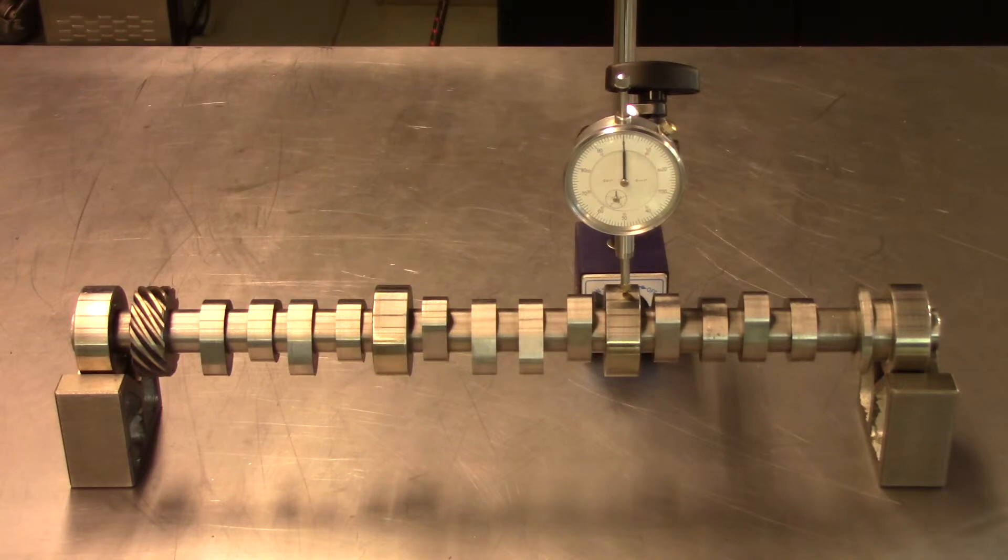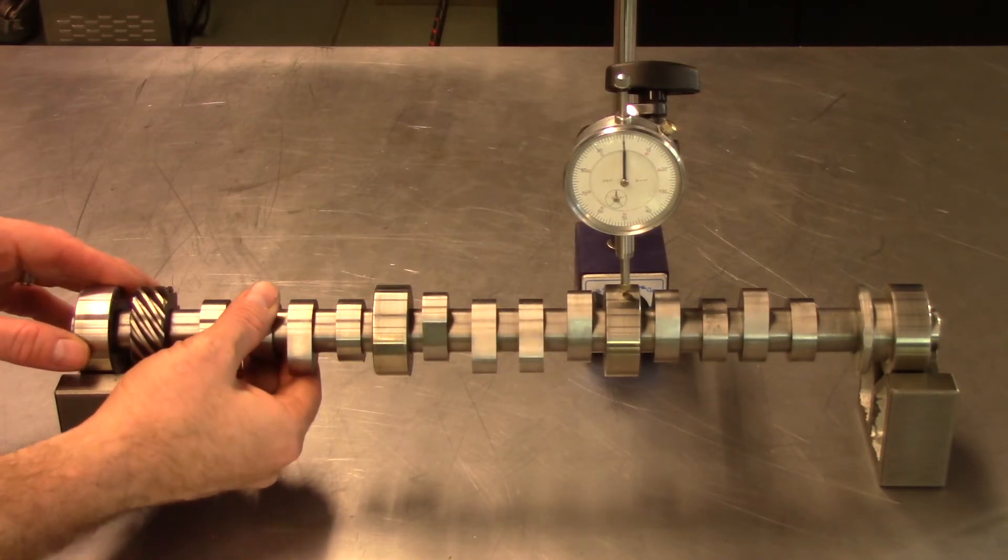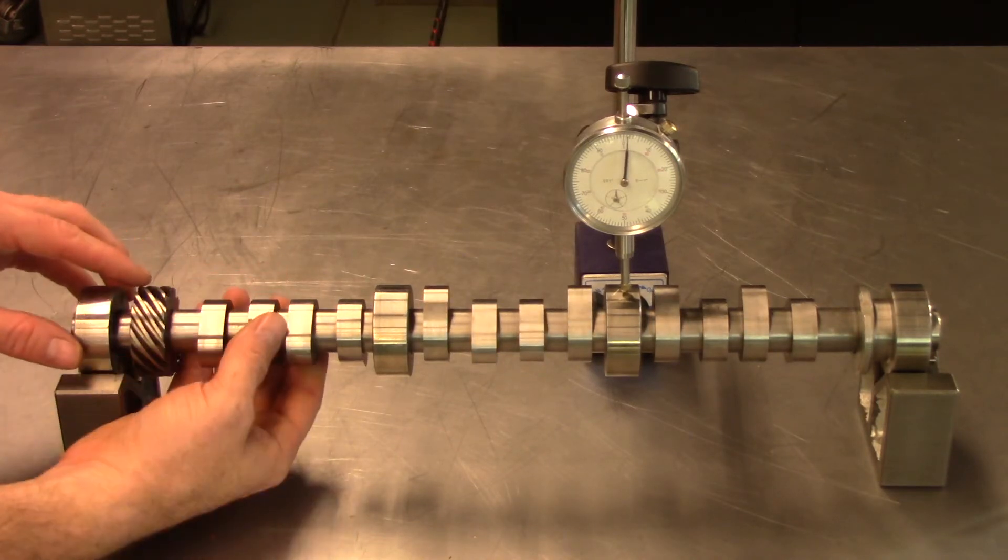With the camshaft resting within the V-blocks on your bench, zero the dial indicator on one of the middle journals. Slowly rotate the camshaft 360 degrees while recording the reading on the dial face.